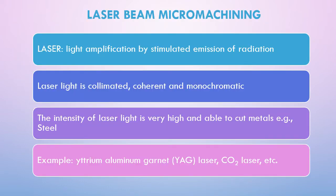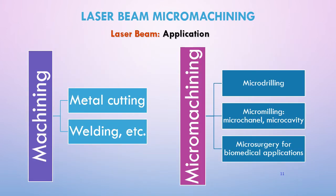The next process we are looking into is laser beam micromachining. Laser is the abbreviation for Light Amplification by Stimulated Emission of Radiation. Laser light is collimated, coherent, and monochromatic in properties, and its intensity is very high, making it able to cut metals such as steel. Examples of laser processes include the yttrium aluminium garnet (YAG) laser and carbon dioxide laser. For laser beam applications, it can be used for metal cutting, welding, and more.